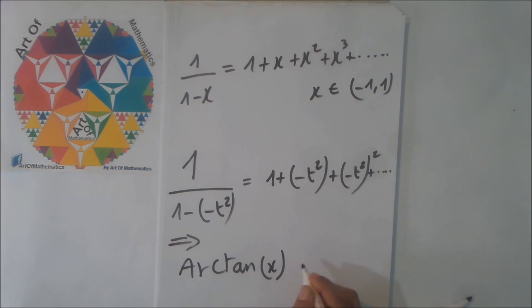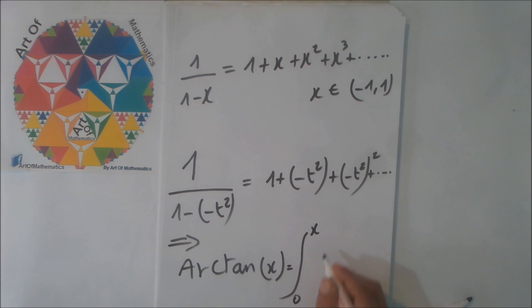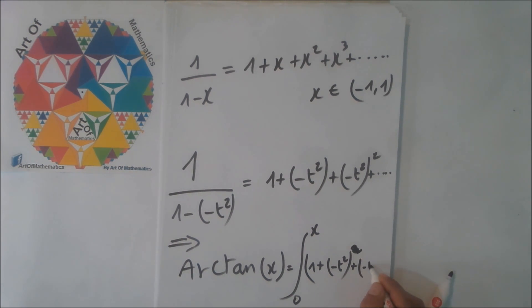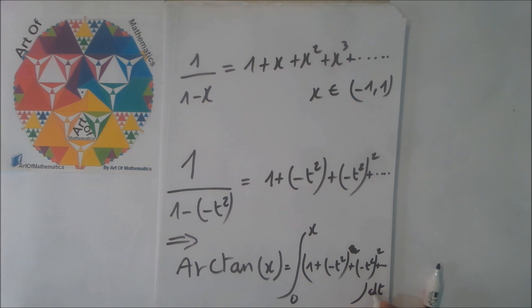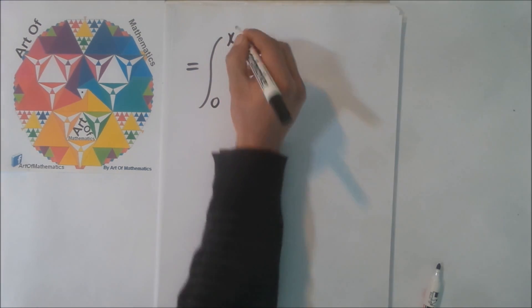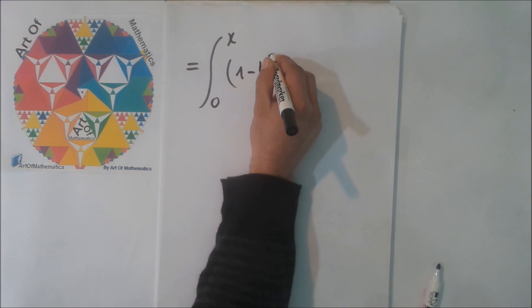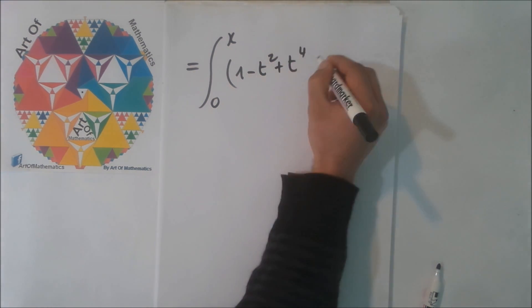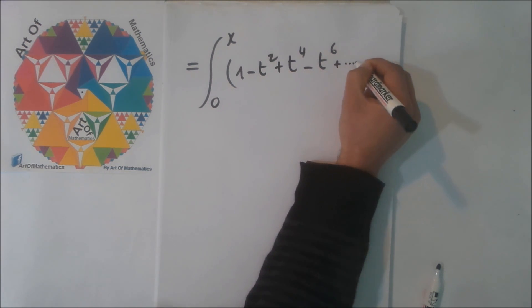Arctangent x is equal to the integral between 0 and x of 1 minus t squared, no not squared here, 1 minus t to some power, and so on, dt. This is nothing here, it's 1 here, equal to...